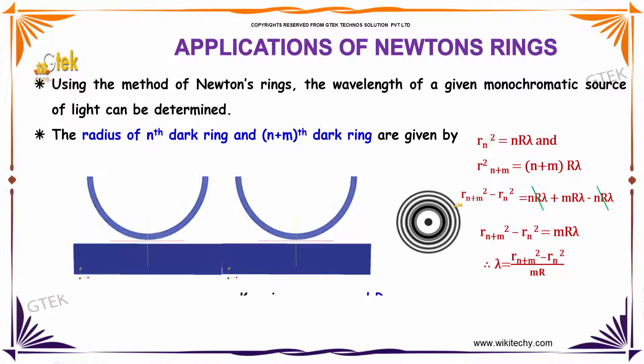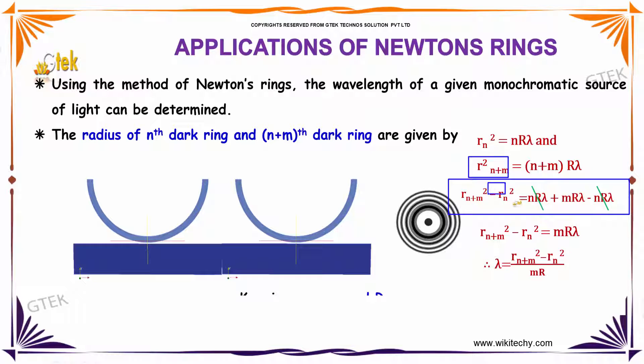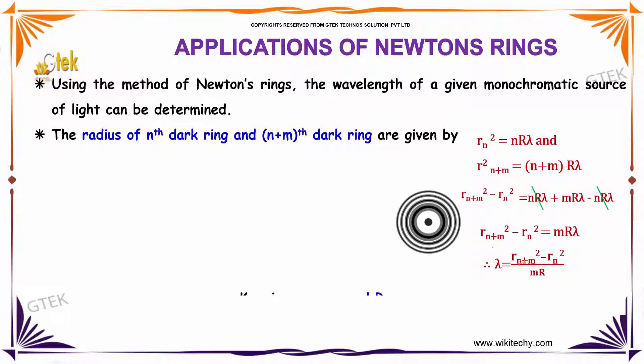So, subtracting both the equations, you will be getting rn plus m square minus rn square is equal to n into r lambda plus m into r lambda minus n r lambda. You will be getting rn plus m square minus rn square is equal to mr lambda, which is nothing but lambda is equal to rn plus m square minus rn square divided by mr.